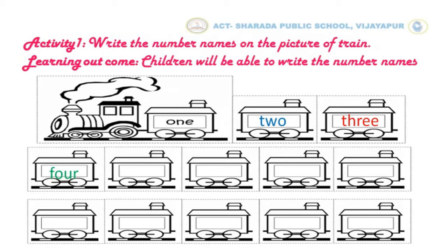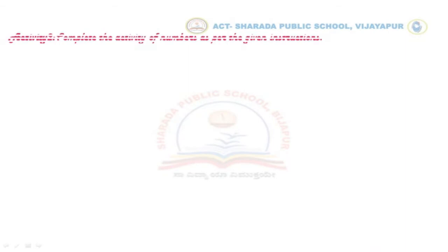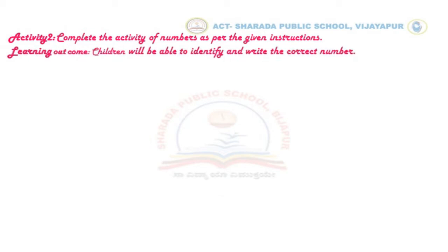Similarly, you have to write the remaining number names to complete this activity. Let us move to activity number 2: complete the activity of numbers as per the given instructions. Through this activity, you will be able to identify and write the correct numbers. The first one is: write the correct numbers to fill in the blanks.